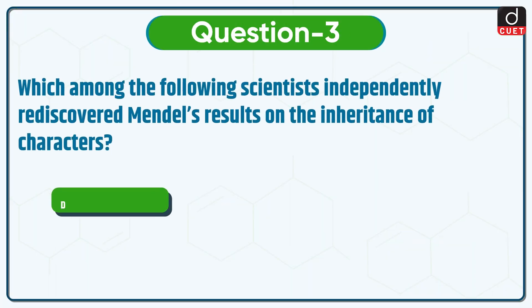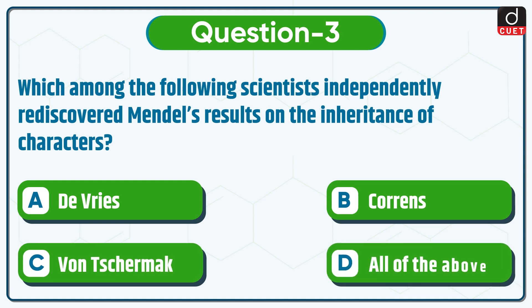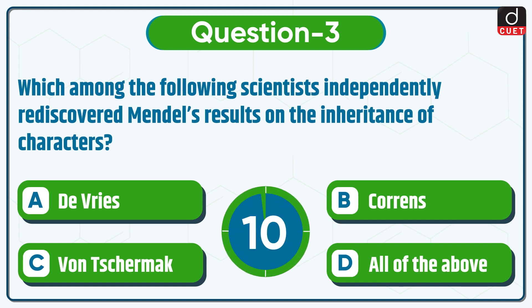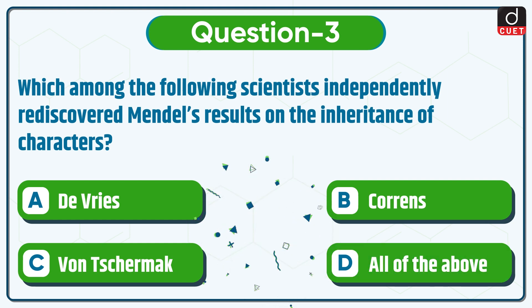Next question is: which among the following scientists independently rediscovered Mendel's results on the inheritance of characters? The correct answer is option D, all of the above.